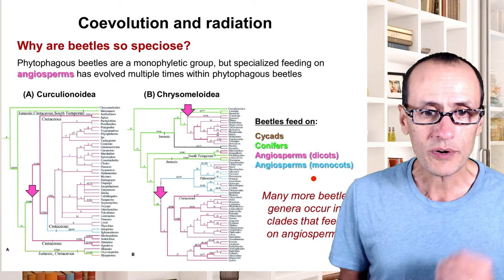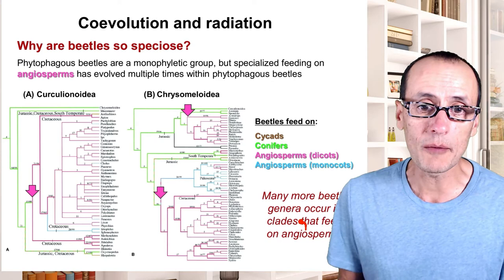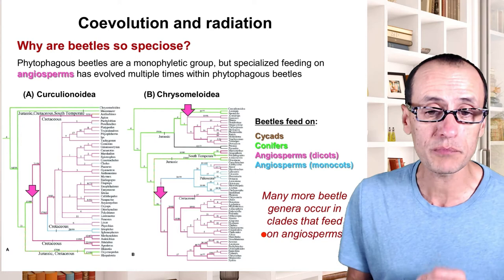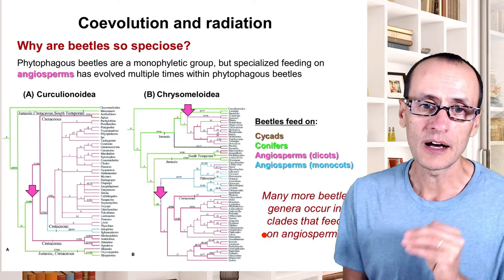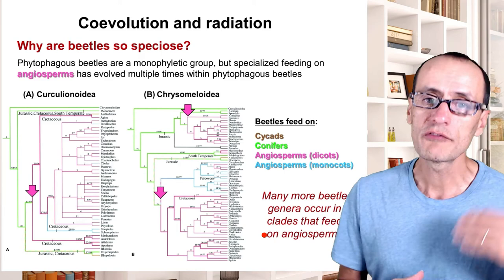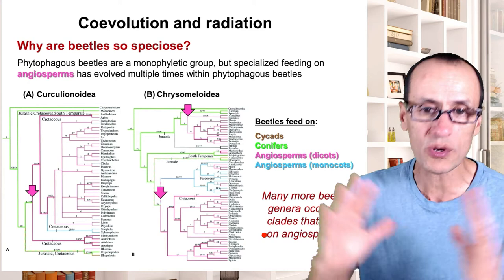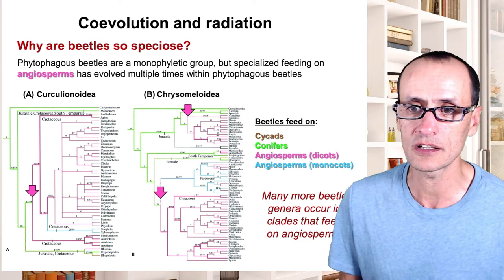One of the key observations Farrell made is that there are many more beetle genera occurring in groups that feed on angiosperms, and not as many species or genera among those that feed on conifers and cycads — which did not have the same great rate of diversification during the late Cretaceous and Jurassic.